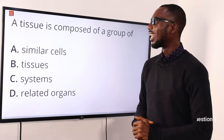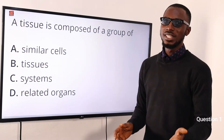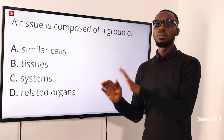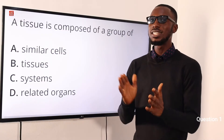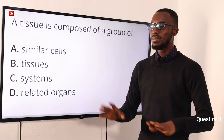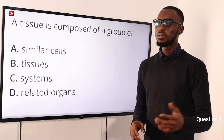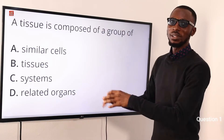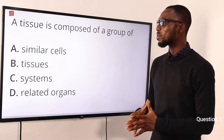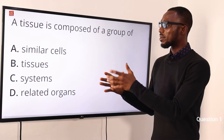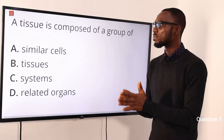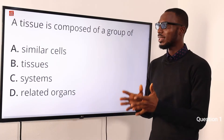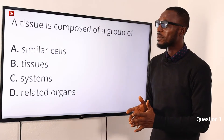Let's start with question number 1. A tissue is composed of a group of what? When you talk about the organization, we have macro-molecules, then organelles, then cells, tissues, organs, system, then organism — multicellular to be precise. This is a good reference to your textbooks. A tissue is composed of cells. Cells make up tissues and tissues make up organs. So the correct option here is option A for similar cells.